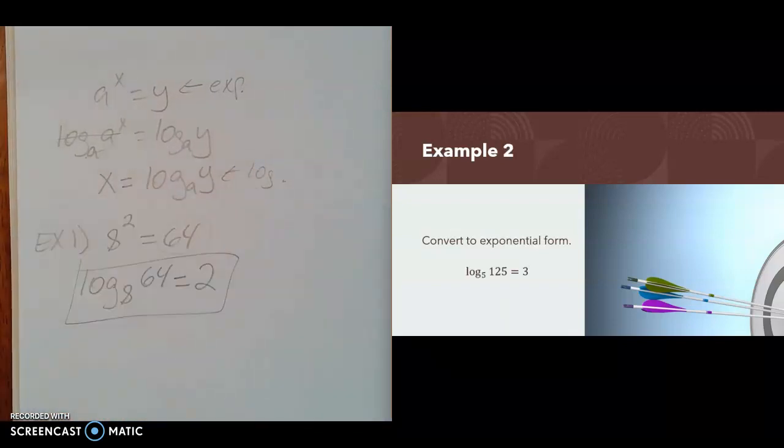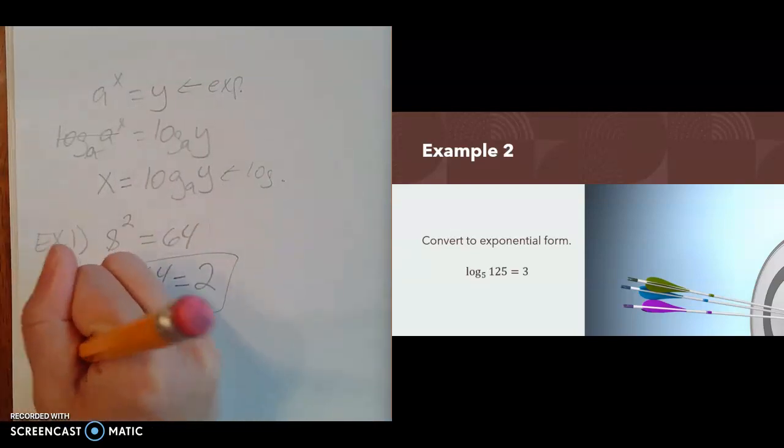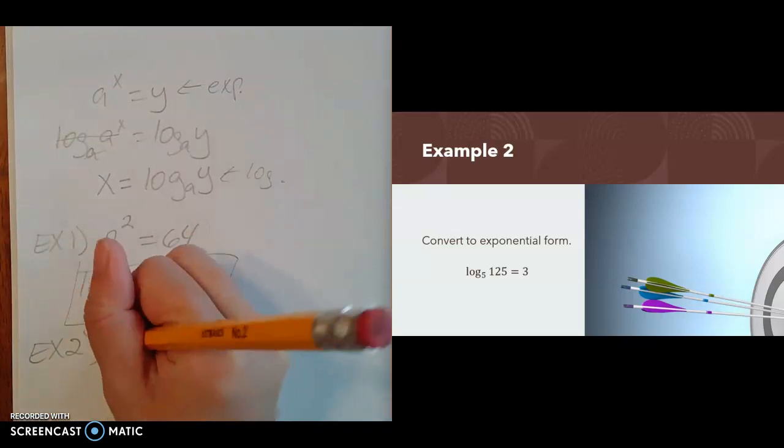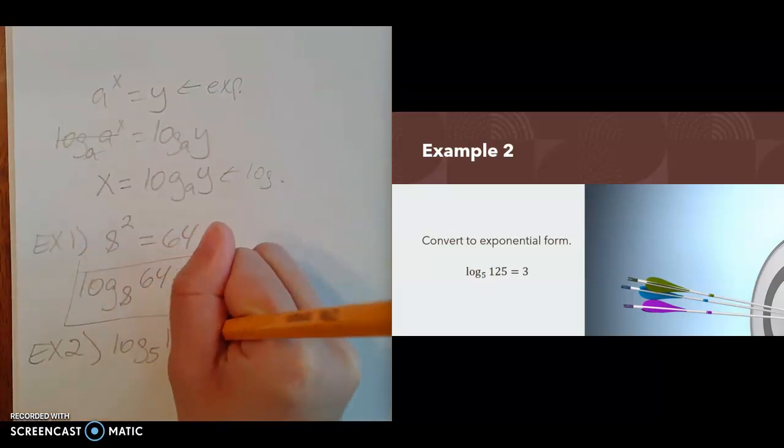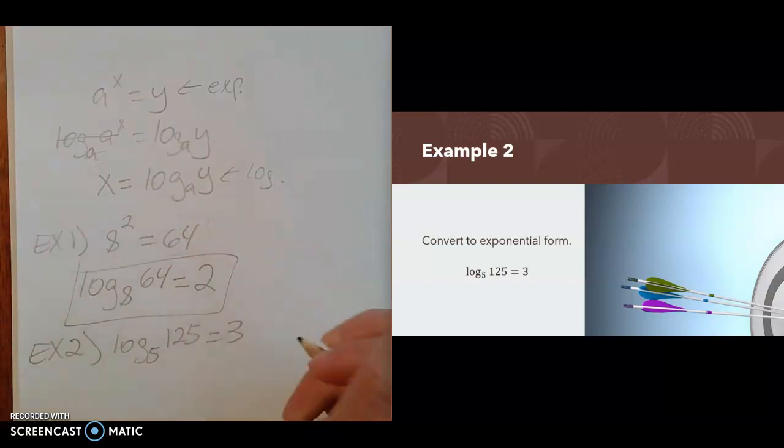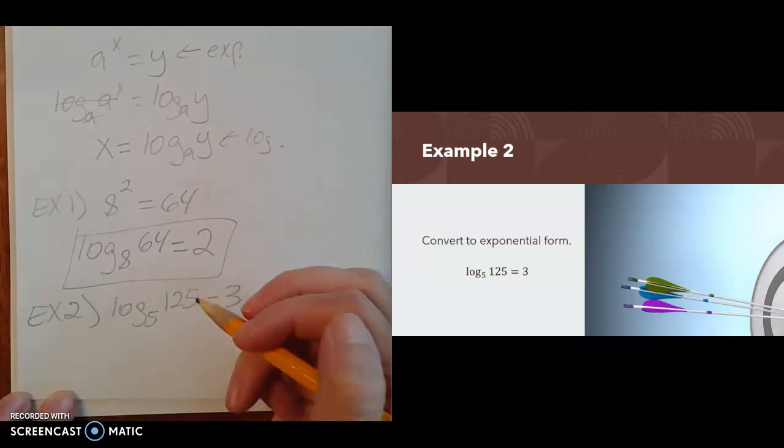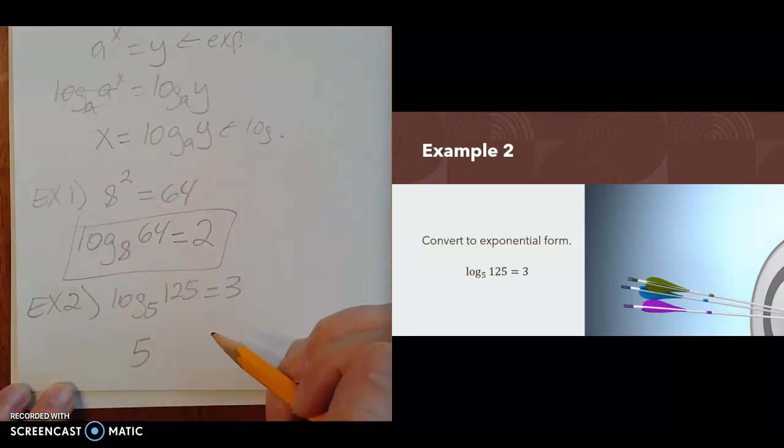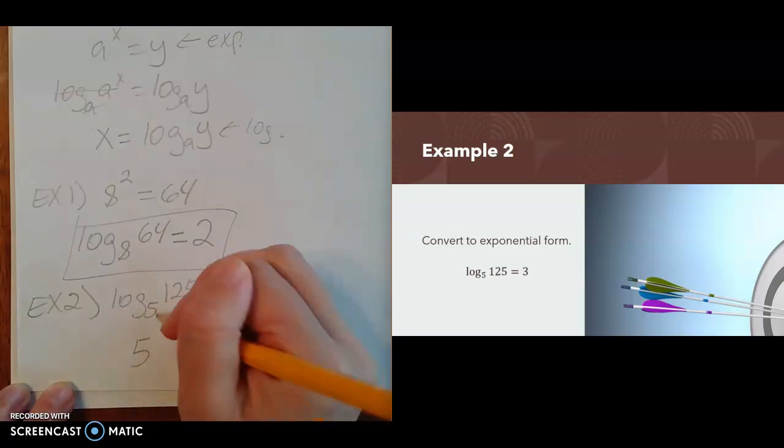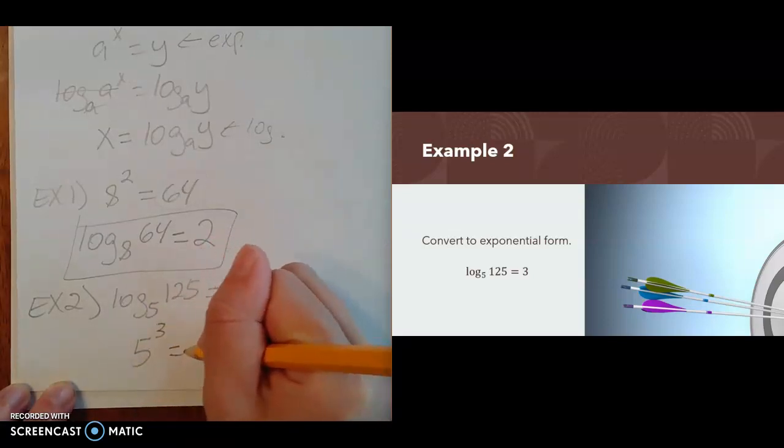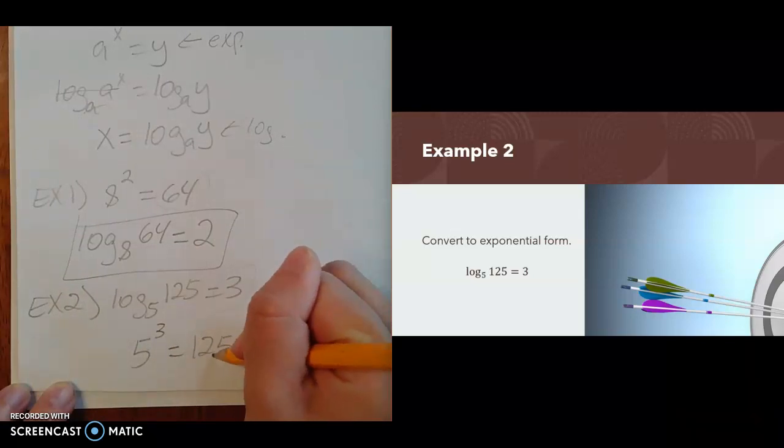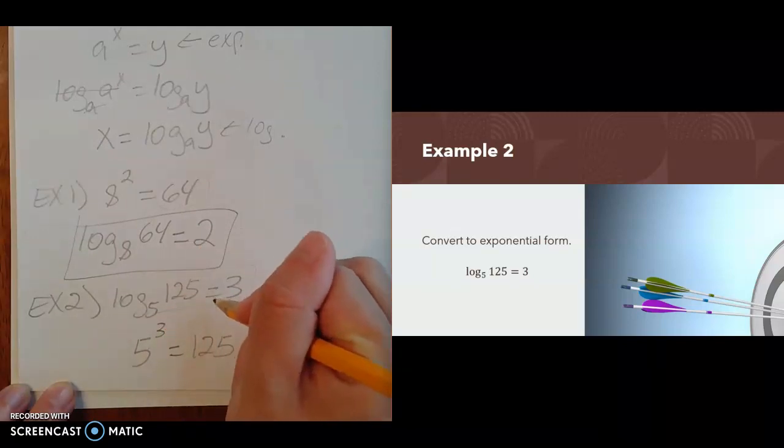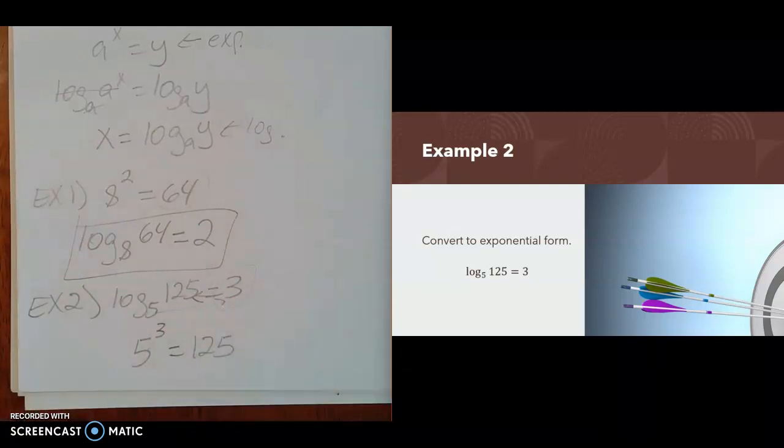What if you need to go backwards? If you have it in log form but want exponential form? Starting with log base 5 of 125 equals 3, the base of your logarithm is the same as the base in exponential form, so we have a base of 5. Whatever it equals, that's your exponent. So it's 5 to the third power, and it equals 125. That's how we go back and forth.